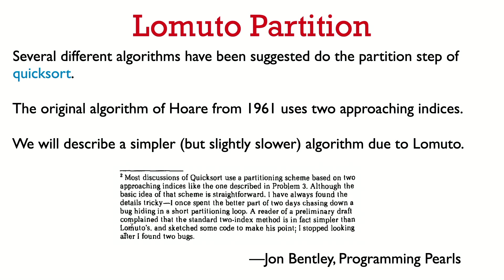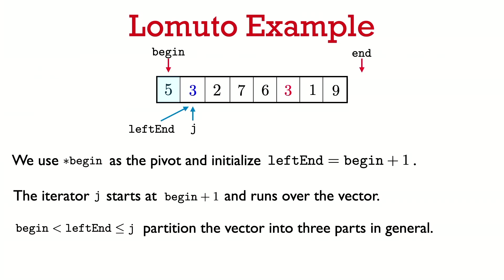So we're going to look at the Lomuto partition algorithm instead. Here's the setup: we want to partition the half-closed interval defined by begin and end. We're going to have two iterator variables called leftend and j. j is a loop variable — it starts at begin plus 1 and runs over the elements of the vector until it reaches end. leftend also starts at begin plus 1.